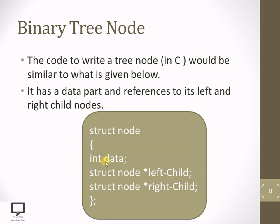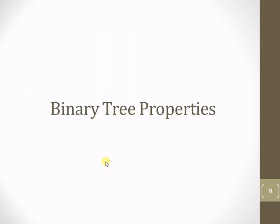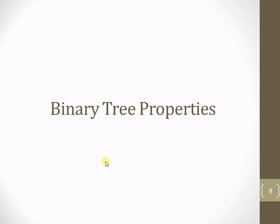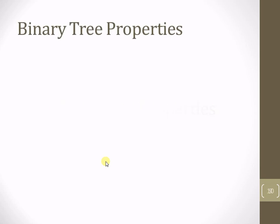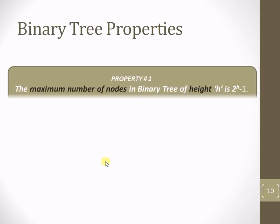Now let's move forward to the binary tree properties. The first property — which I've already explained — is that a binary tree node can have 0, 1, or a maximum of 2 child nodes. Let's move to the next properties.